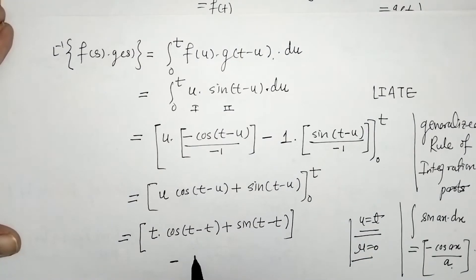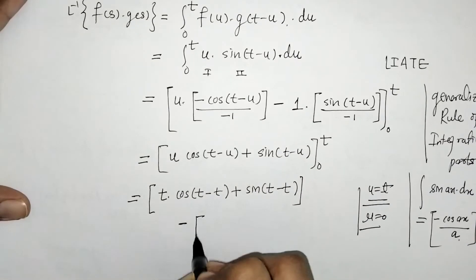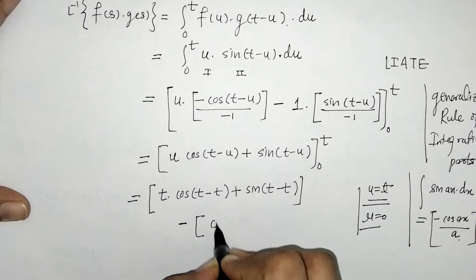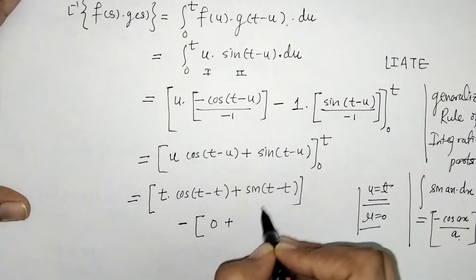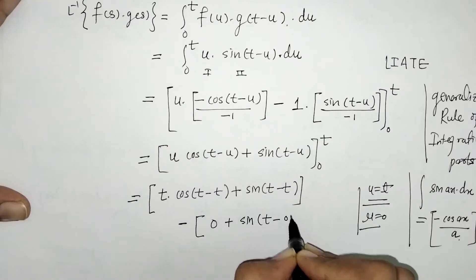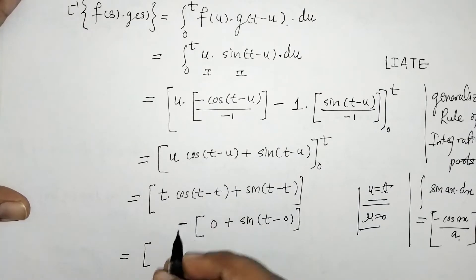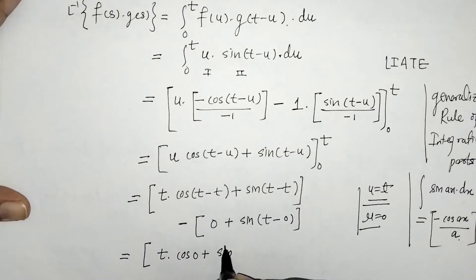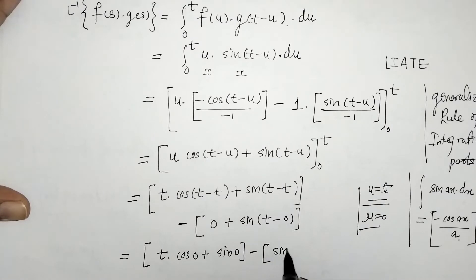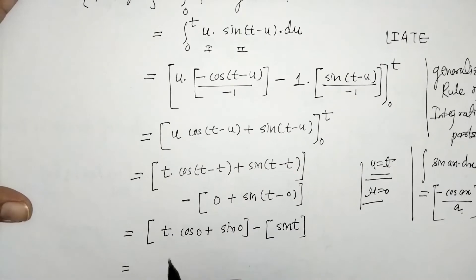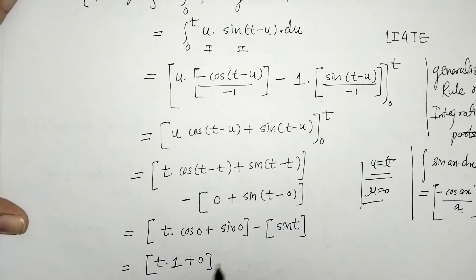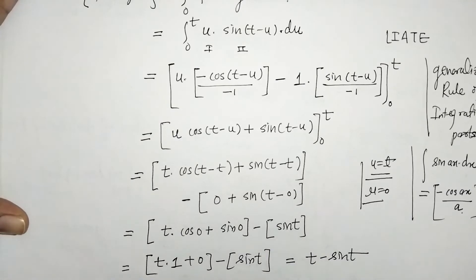For the lower limit u = 0: we have 0·cos(t) + sin(t - 0) = 0 + sin(t) = sin(t). So simplifying: t·cos(0) + sin(0) minus sin(t). Since cos(0) = 1 and sin(0) = 0, this gives t·1 + 0 - sin(t), which equals t - sin(t).